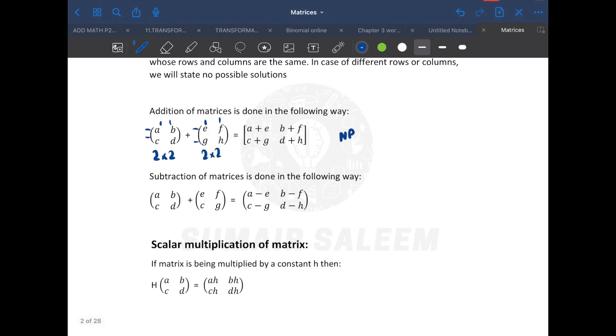Then comes scalar multiplication of the matrix. Anything multiplied by a matrix, it's called scalar multiplication. It's going to be 3 times 4 is 12, 3 times 2 is 6, 3 times 4 is 12, 3 times 3 is 9. Got this?